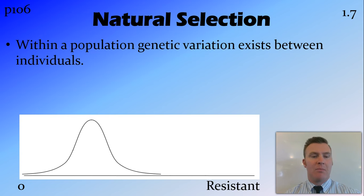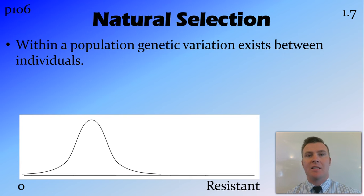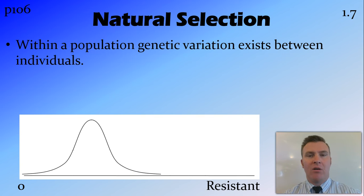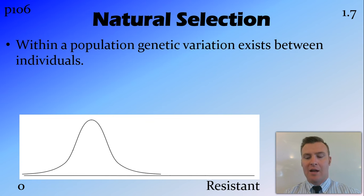In this example I'm going to talk about chemical resistance — for example, flies resistant to DDT. There is a natural variation within the species, and some of these flies are a little bit resistant and some are not resistant at all, so some are quite susceptible to these chemicals.